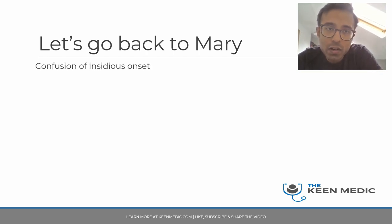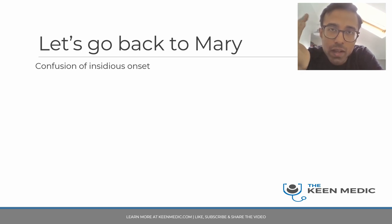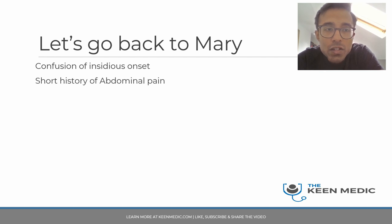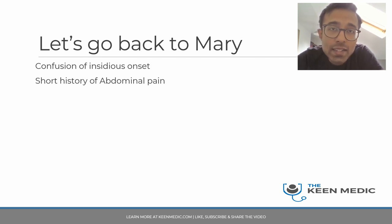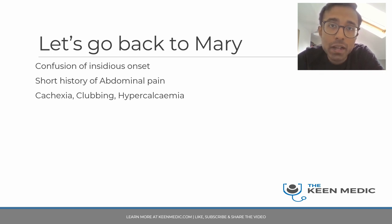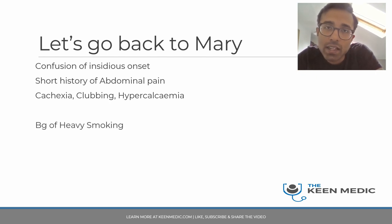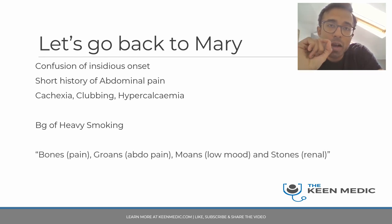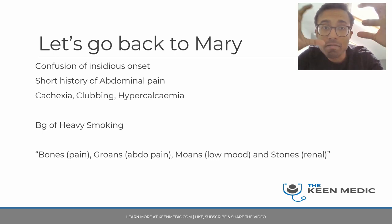Bringing everything together: her confusion is of insidious onset — not sudden, which would suggest a vascular event like intracranial haemorrhage. The abdominal pain has developed over a few days to two weeks, suggesting constipation rather than an acute abdomen with peritonism. Cachexia, clubbing, and hypercalcaemia are all present. Combined with a background of heavy smoking and a nodule on chest X-ray, the picture points clearly to an underlying malignancy.